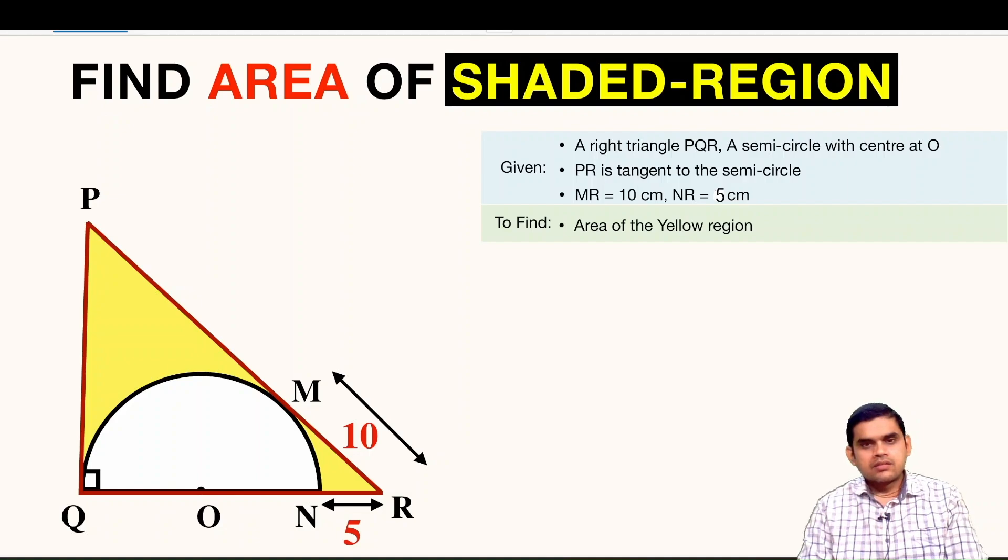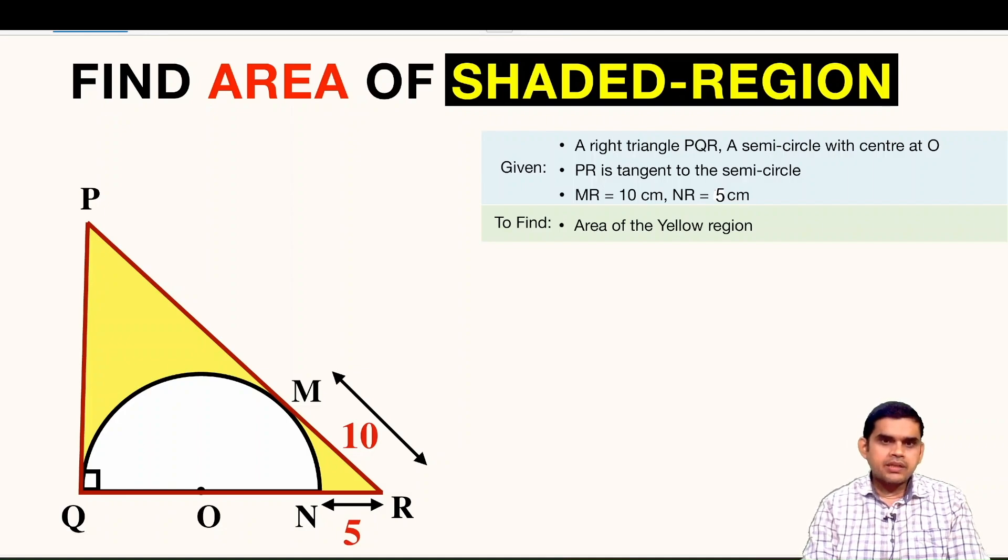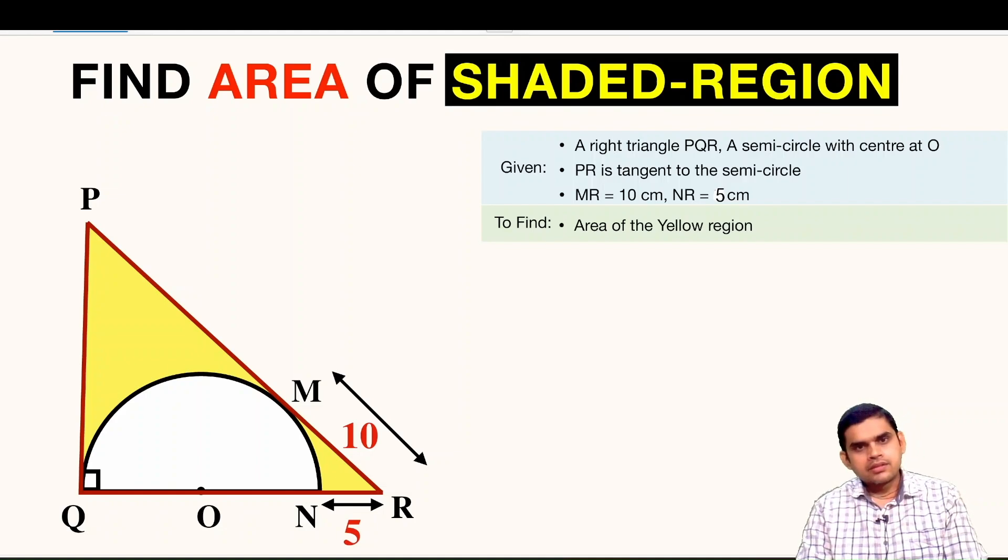Let us see what are the things given. So we have a right triangle PQR and there is a semicircle with center at point O. PR is tangent to the semicircle. The length of MR is 10 units and NR is 5 units.